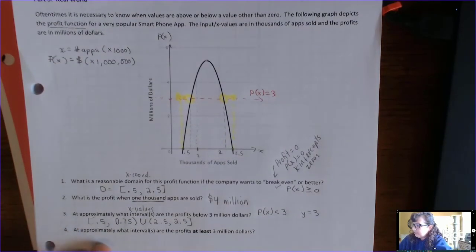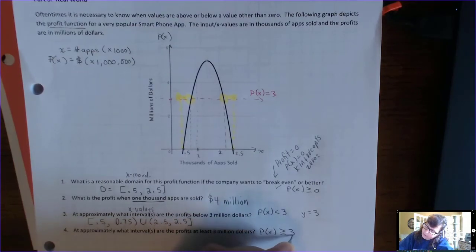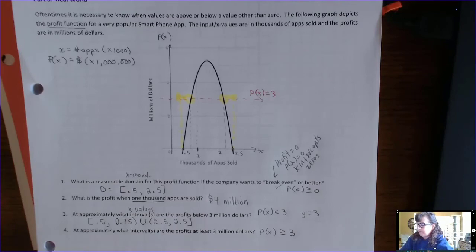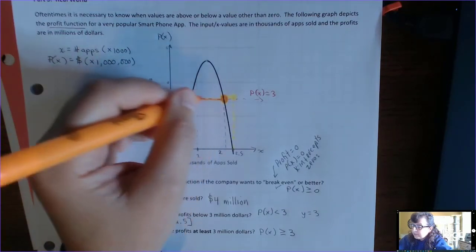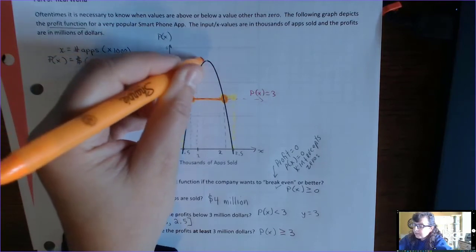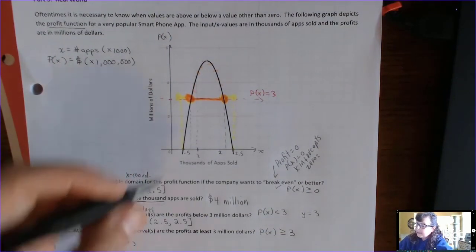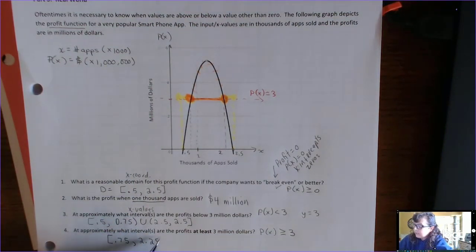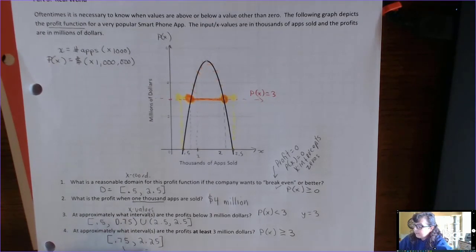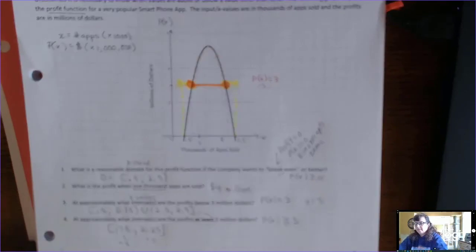Alright, and then the last question, at approximately what interval are the profits at least? So, the word at least means, at least 3 million dollars means it could be equal to 3 million dollars or greater. So, that's going to mean we're going to have brackets in certain places. So, here's where it's equal to 3, and these are the x values that are making it greater than equal to 3. So, what are these x values? Well, we figured out that this point is 0.75 all the way through this point, which we said was 2.25. And instead of parentheses, we get to use brackets, because this is where they equal 3 million. And we get to use the equal sign, because it said at least.